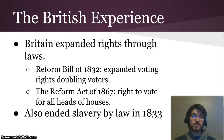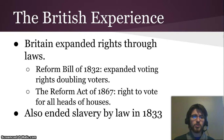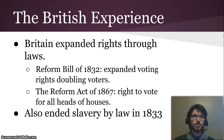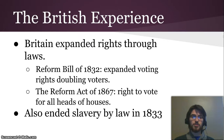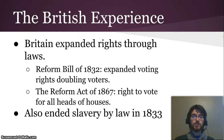For instance, these two reform bills are examples of how they managed the demands for rights of new working class individuals. The Reform Bill of 1832 expanded voting rights, doubling the number of voters in Britain, which is incredible. They did that by restructuring where the boroughs — like our voting districts — were, and also who could vote, because it used to be very heavily based on property owning, which you don't really have if you're living in a city. Then the Reform Act of 1867 gave the right to vote to all people who were heads of households, which is a huge deal.